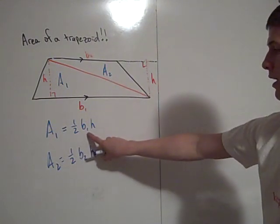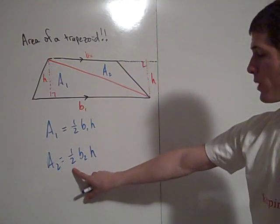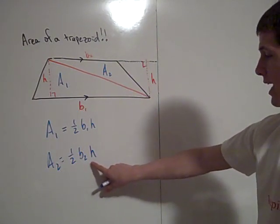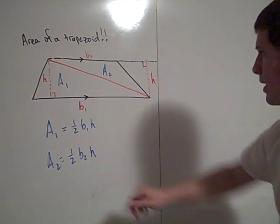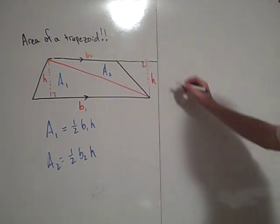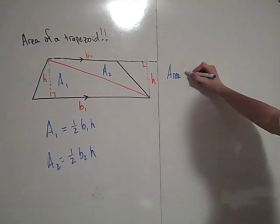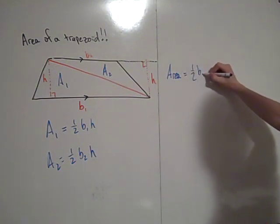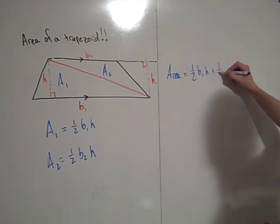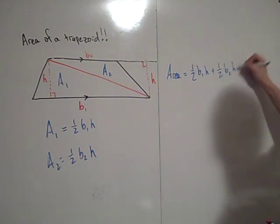The area of area 1 is 1 half B1H and the area of area 2 is 1 half B2H. That means the area of the trapezoid is equal to 1 half B1H plus 1 half B2H.